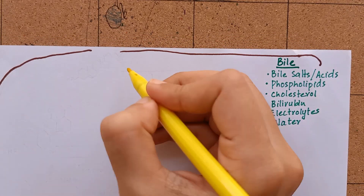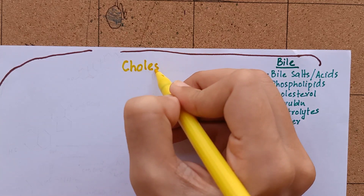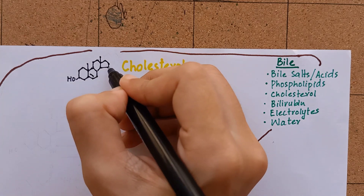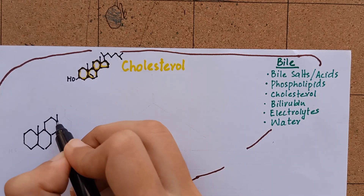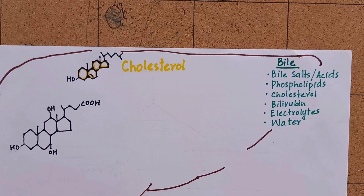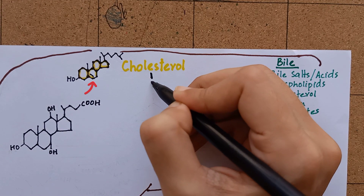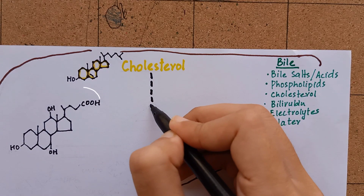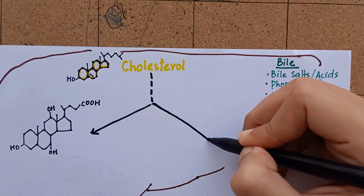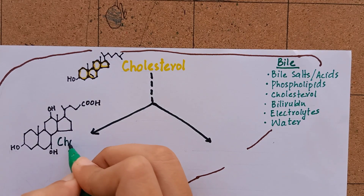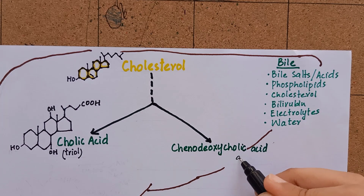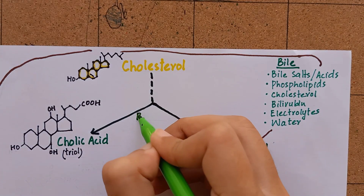Bile is the major route by which cholesterol is eliminated from the body. Bile acids are synthesized from cholesterol in the liver by a multi-step, multi-enzyme pathway. First, hydroxyl groups are inserted at specific positions on the steroid nucleus. The double bond of cholesterol's B ring is reduced and the hydrocarbon chain is shortened by three carbons, introducing a carboxyl group at the end of the chain. The most common resulting compounds are called the primary bile acids.